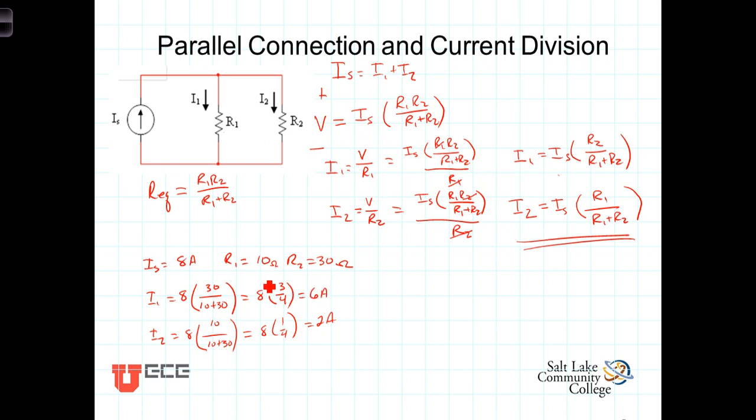Back to our example. Let's now allow R2 to increase to 70 ohms. We're going to leave R1 at 10 ohms, but now we're going to let R2 increase to 70 ohms. And let's once again calculate I1 and I2.